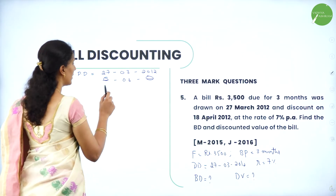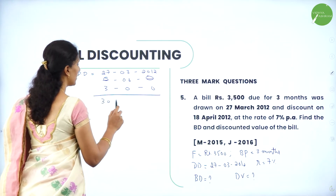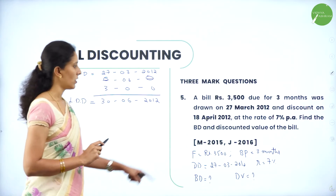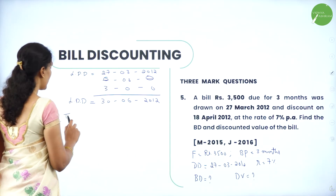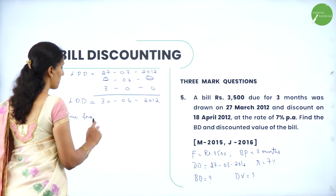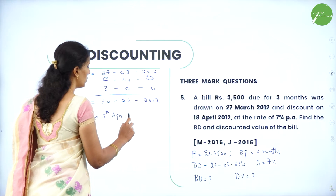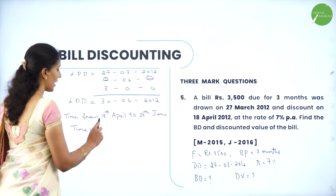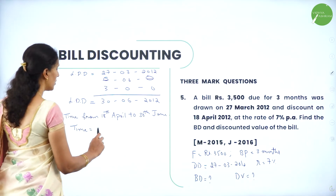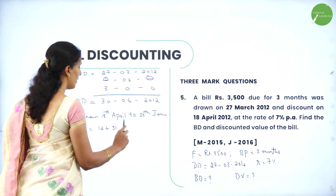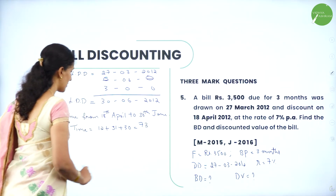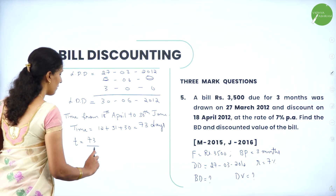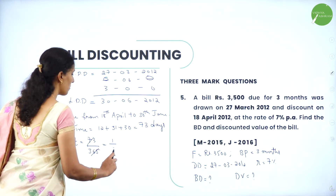Date of drawing is 27-3-2012. Adding bill period of 3 months and grace of 3 days, the legally due date becomes 30-6-2012. Now let us calculate the number of days from 18th April to the legally due date, 30th June. After 18th April we have 12 more days in April, then May has 31 days, and June has 30 days — total 73 days.